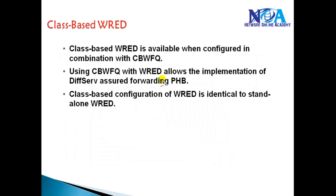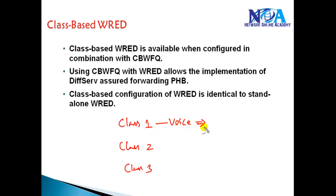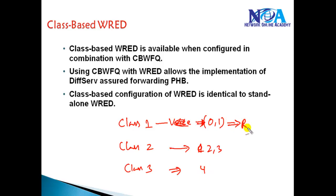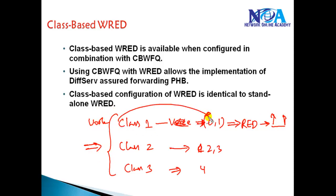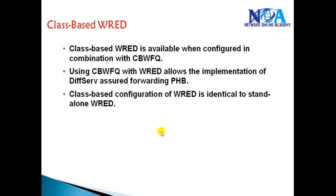The last implementation is Class-Based Weighted RED (CBWRED), where we create class maps as we did in previous sessions and match specific types of traffic such as voice. We can define our own parameters — for example, Class 1 matches precedence values 0 and 1, Class 2 matches precedence values 2 and 3, and Class 3 matches precedence value 4. We then define the RED minimum and maximum threshold values based on these class maps, and the traffic is treated according to the markings defined by the administrator instead of default marking values.